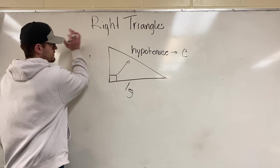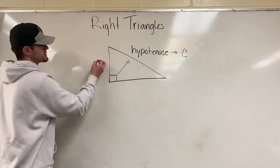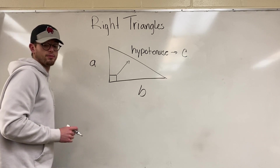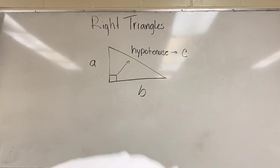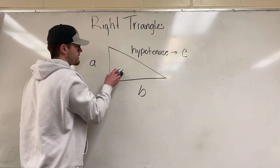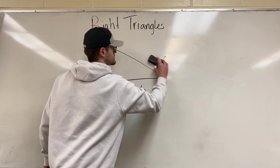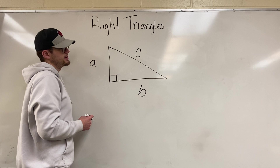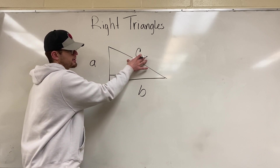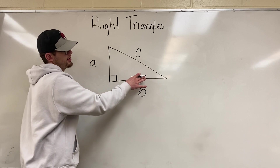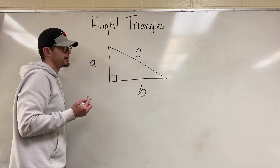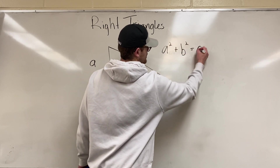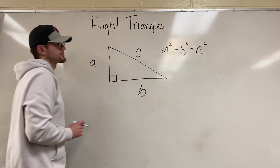The Pythagorean theorem uses these letters. What it states is that the hypotenuse squared will always equal the sum of both legs squared. This is where you get a squared plus b squared equals c squared.